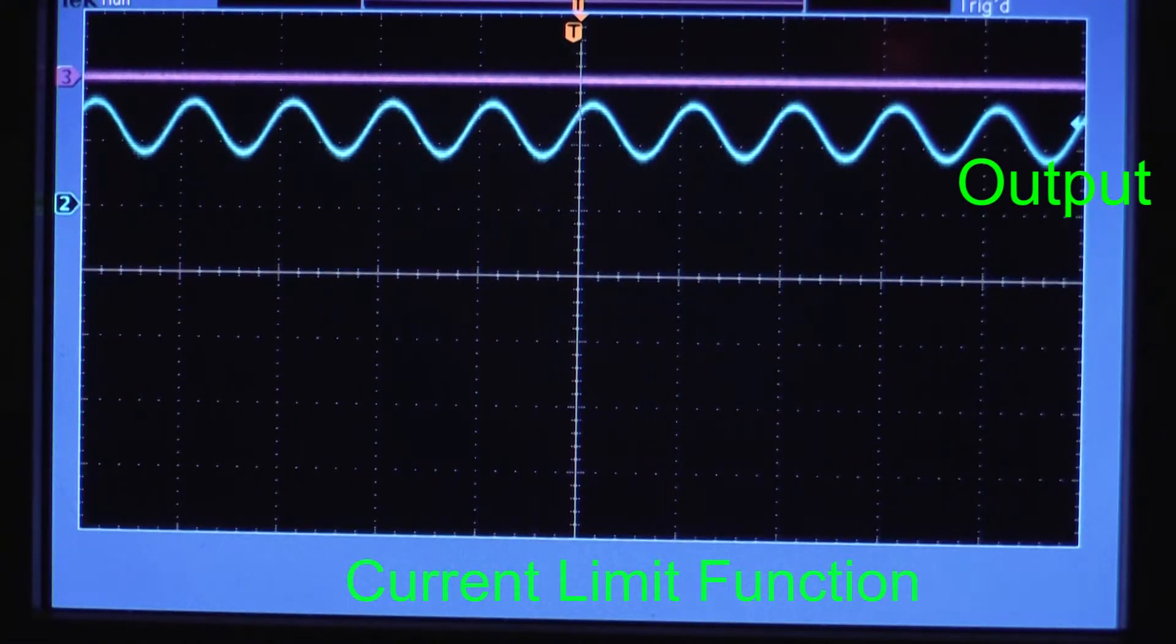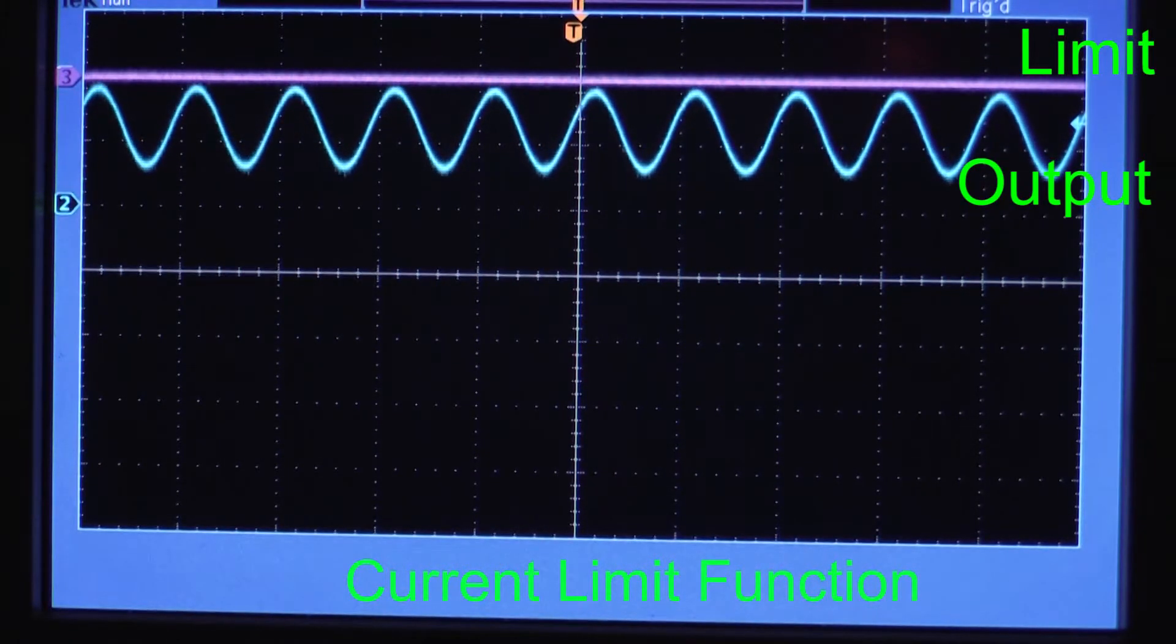Each laser diode datasheet will specify a maximum operating current. Exceeding this current will damage the laser diode. To avoid this, a limit circuit is included in the laser diode driver.